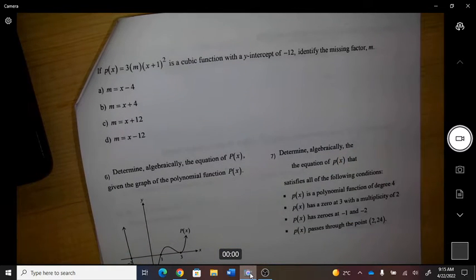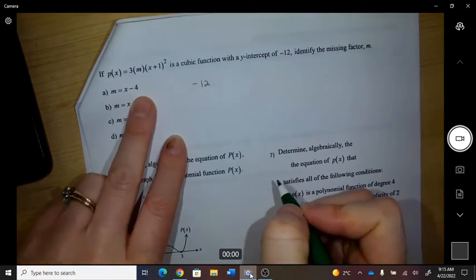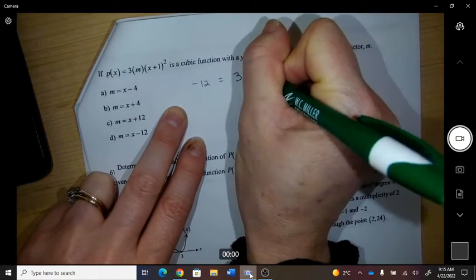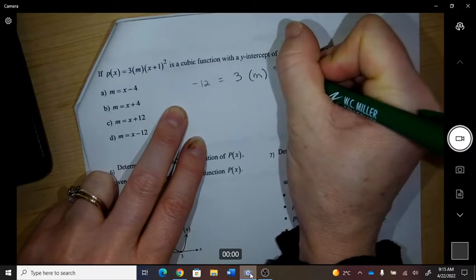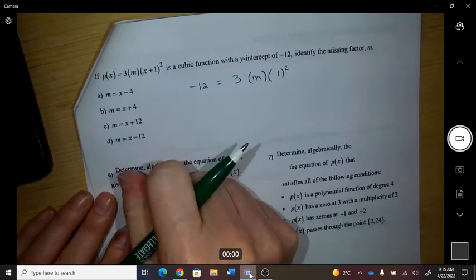If p of x is that, is a cubic function with a y-intercept of negative 12, identify the missing factor. Okay, so if I want the y-intercept to be negative 12, 3 times something times 1 squared, because at that point x is 0.